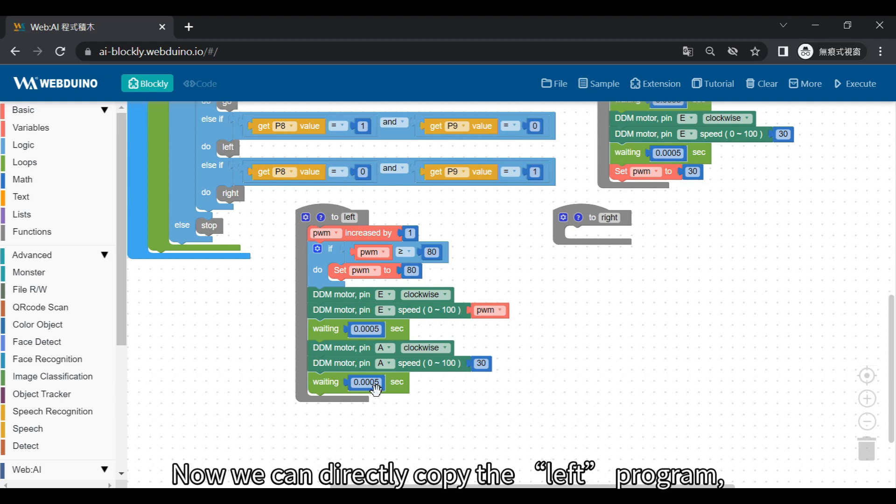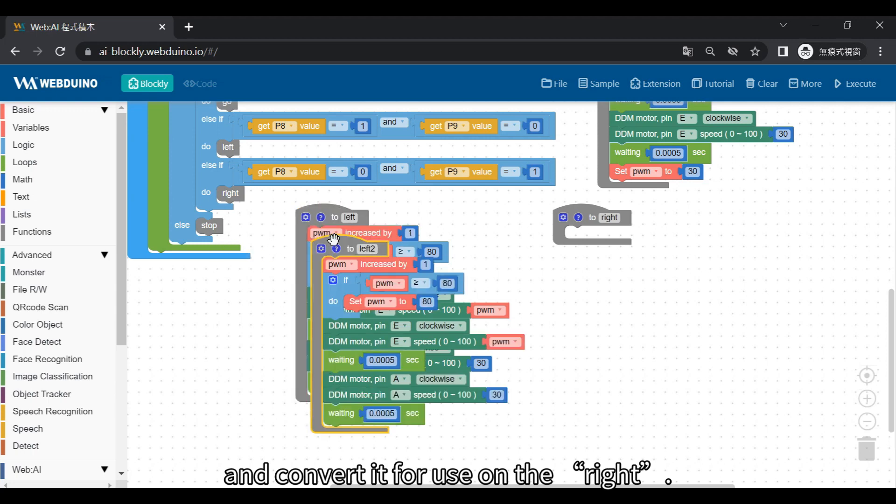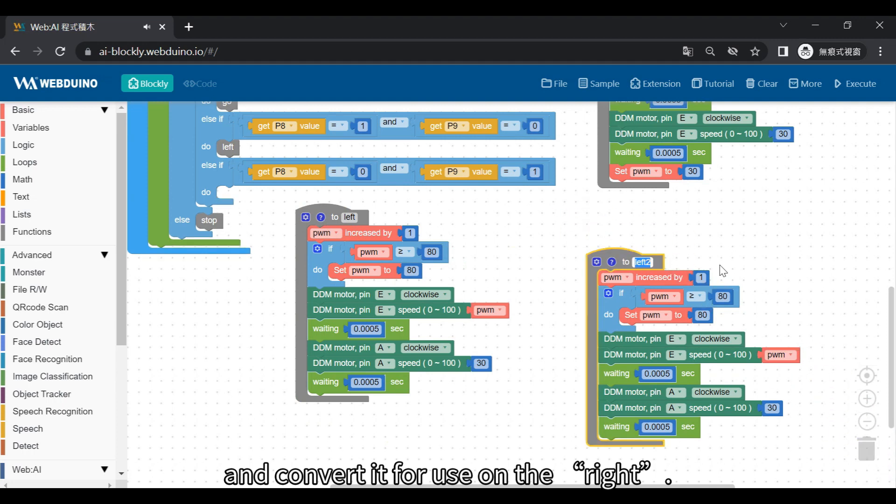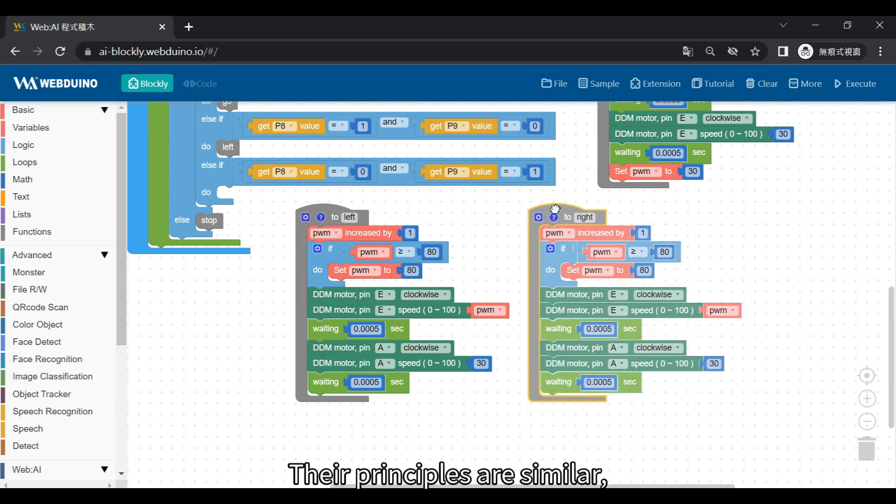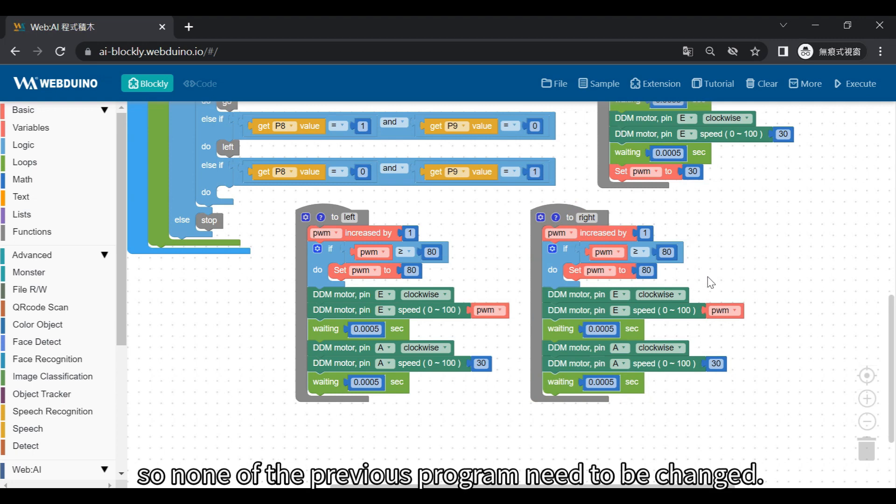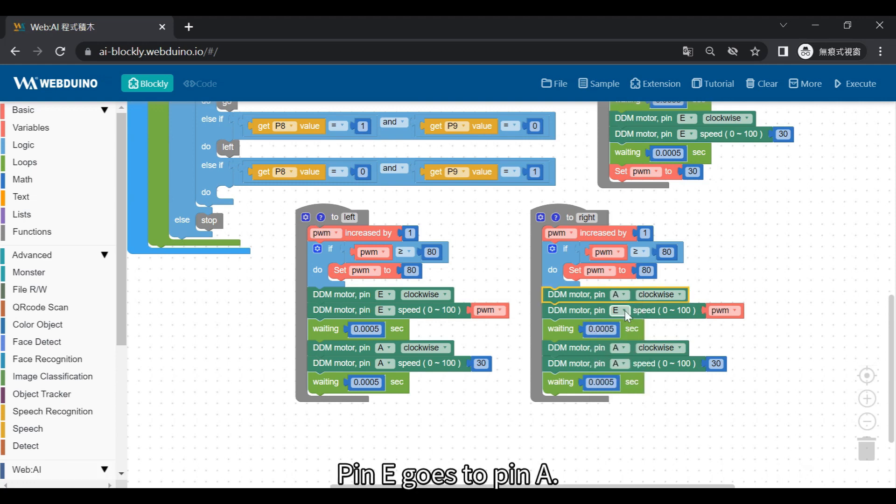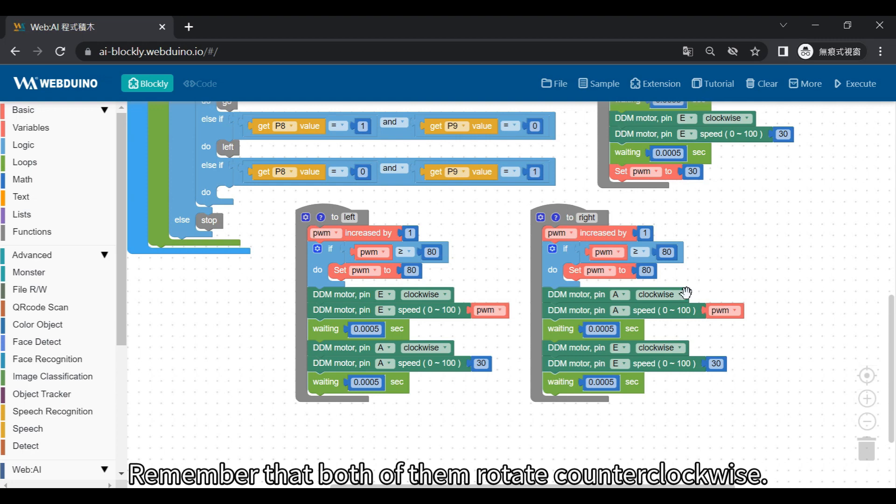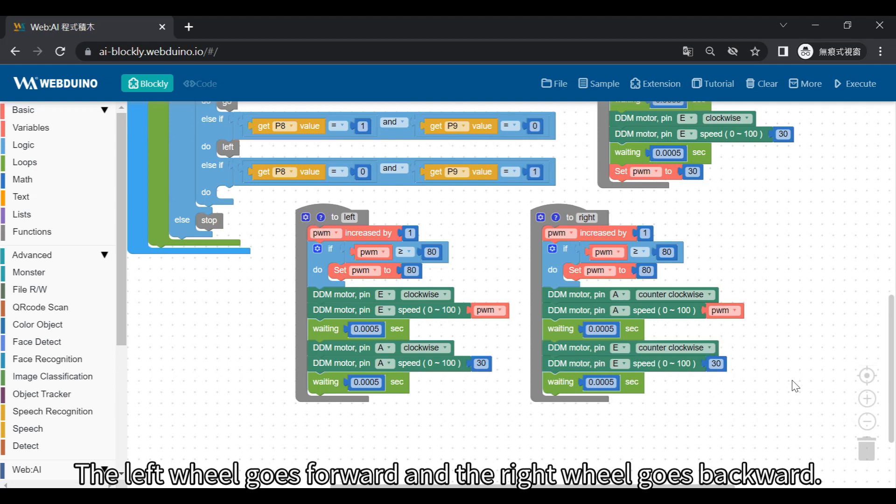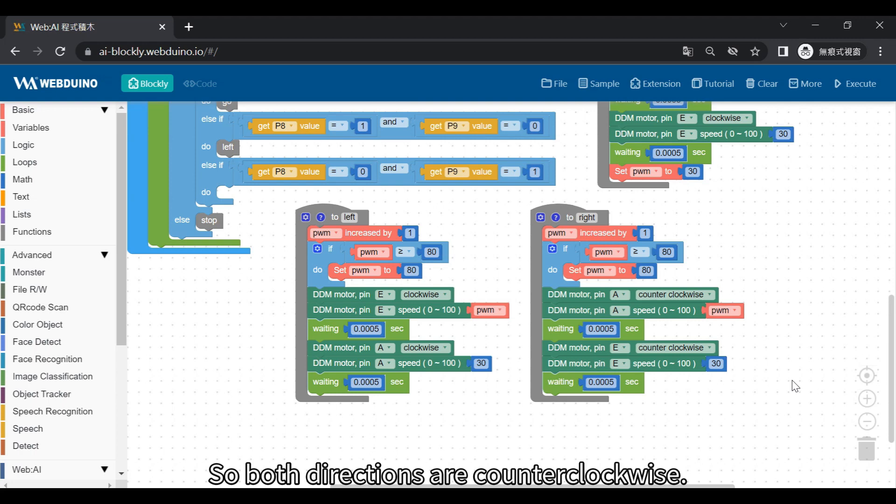Now we can directly copy the left program and convert it for use on the right. The principles are similar. So none of the previous program need to be changed. We just need to set the pin position and directions to the opposite values. Pin E goes to pin A. Below is pin A to pin E. Now the motor does the opposite. Remember that both of them rotate counterclockwise. The left wheel goes forward and the right wheel goes backward. So both directions are counterclockwise. Basically they are complete opposites. Let's check it again. The maximum value of the variable PWM is 80. Then motor A rotates counterclockwise, and the speed is variable PWM.